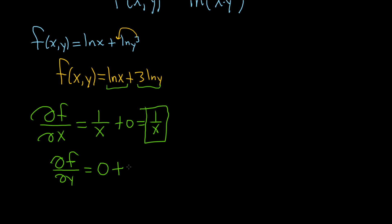well, the 3 is a constant. And we differentiate the ln y, and we get 1 over y. So this would be 3 over y. And those would be the first order partial derivatives.